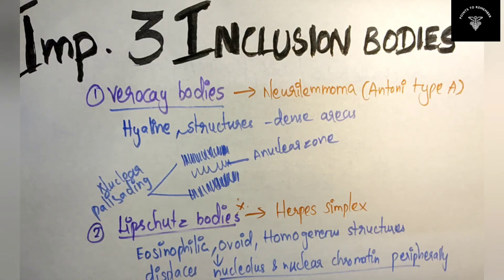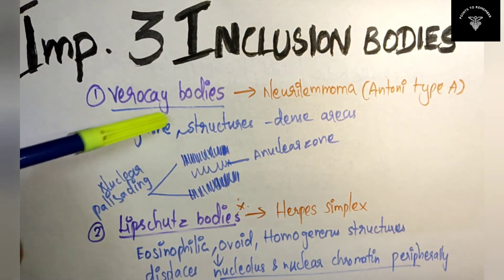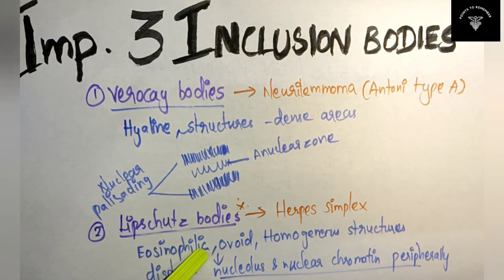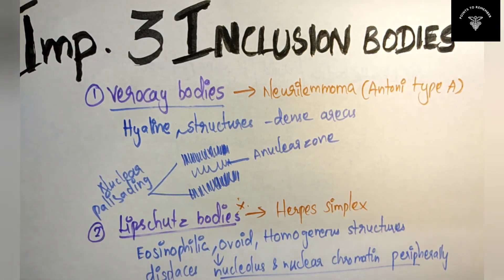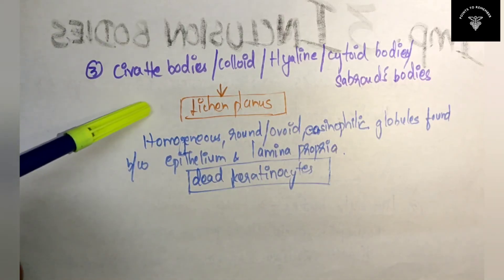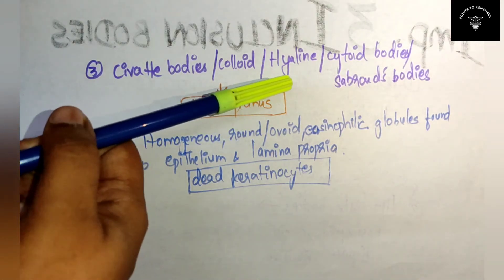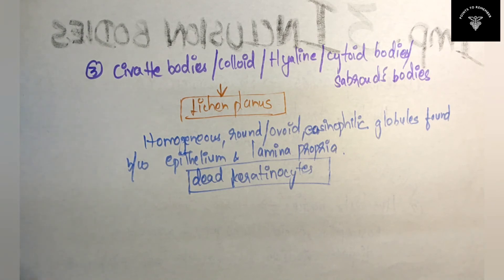Quick recall of the three important inclusion bodies: First is Verocay bodies, seen in neurilemoma Antoni type A. Second is Lipschutz bodies, seen in herpes simplex. Third is Civatte bodies — also known as colloid, hyaline, cytoid, or Sabroe's bodies — seen in lichen planus. These are the three important inclusion bodies you should know for your exam.